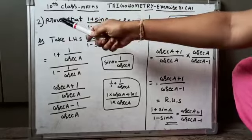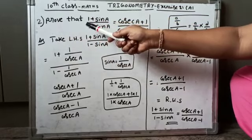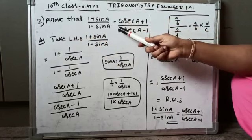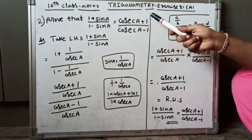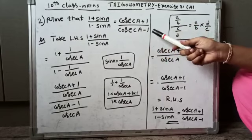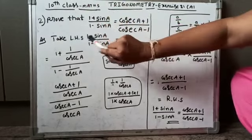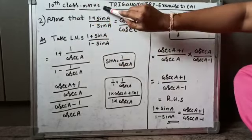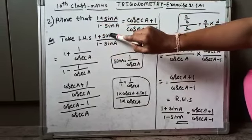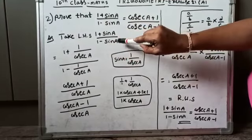Next problem: prove that (1 + sin A) / (1 - sin A) = (cosec A + 1) / (cosec A - 1). We take the LHS part: LHS = (1 + sin A) / (1 - sin A).